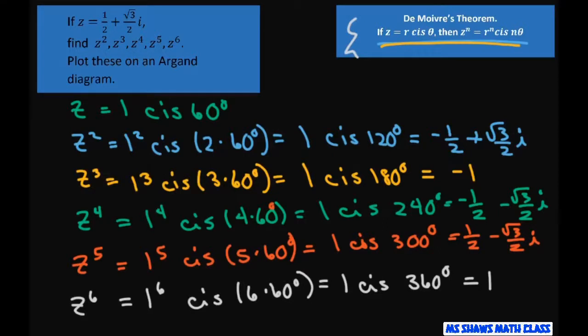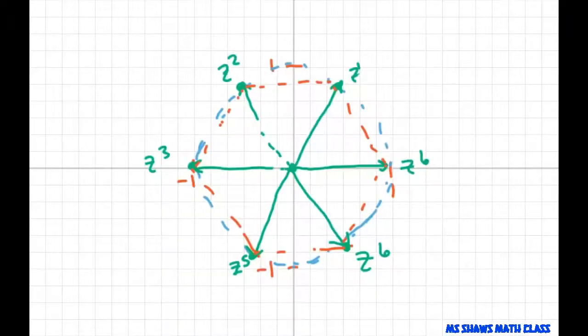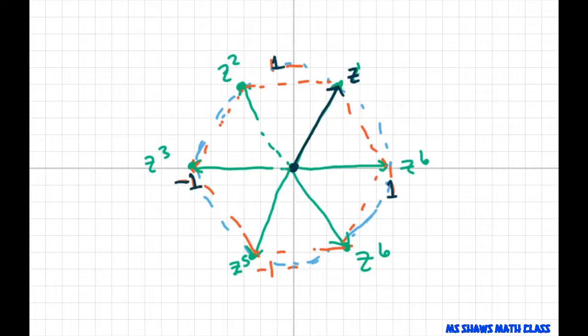Now we have to plot these. I already did that—it's kind of hard to draw. For z, that was 1 cis 60°, so I plotted this as 60 degrees with radius 1. Here are your 1s.